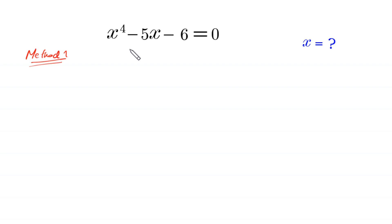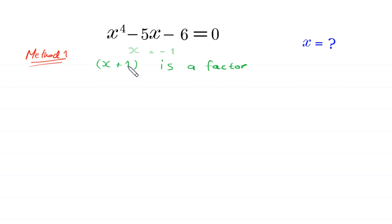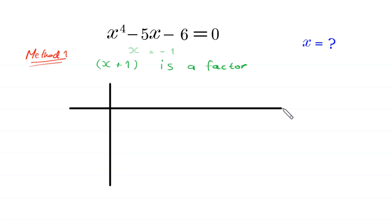We notice that x is equal to negative 1 is a solution to this equation. It means x plus 1 is a factor. To find the other factor we use synthetic division. The coefficient of x to the power 4 is 1. In place of x cubed we write 0. In place of x squared we write 0. The coefficient of x is negative 5 and the constant is negative 6.